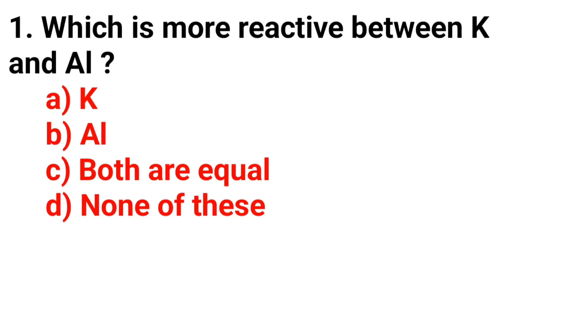Question 1. Which is more reactive between potassium and aluminum? The correct answer is Option A, Potassium.